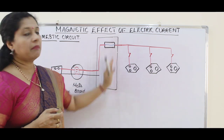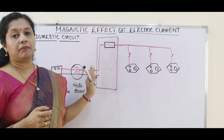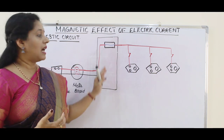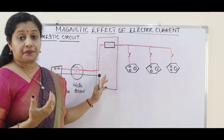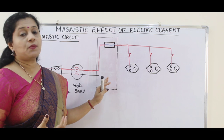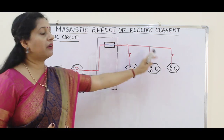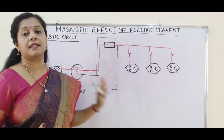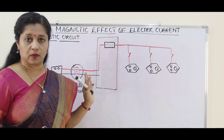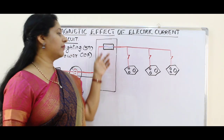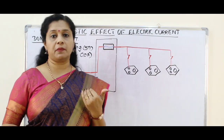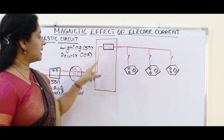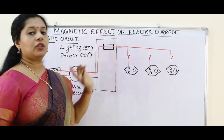This is our main switch. It has the main fuse of our house and also the main switch for switching off or controlling all the appliances inside the house. Inside this main switch the fuse is the consumer's fuse — it is our fuse. Here, the live wire is entering through this first.